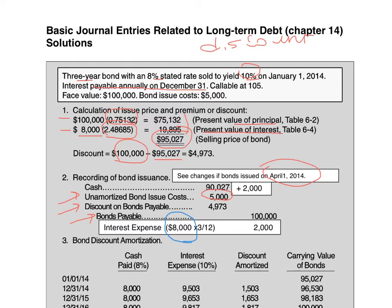You can either credit interest expense, which will reduce it, or you can use interest payable. My suggestion in our case will be to use interest expense — it just makes the next journal entry, when we're paying interest out, a little bit easier to deal with. Also, the same $2,000 will be added to cash received, so it would be $92,027. But the rest is the same, so it's not that hard.